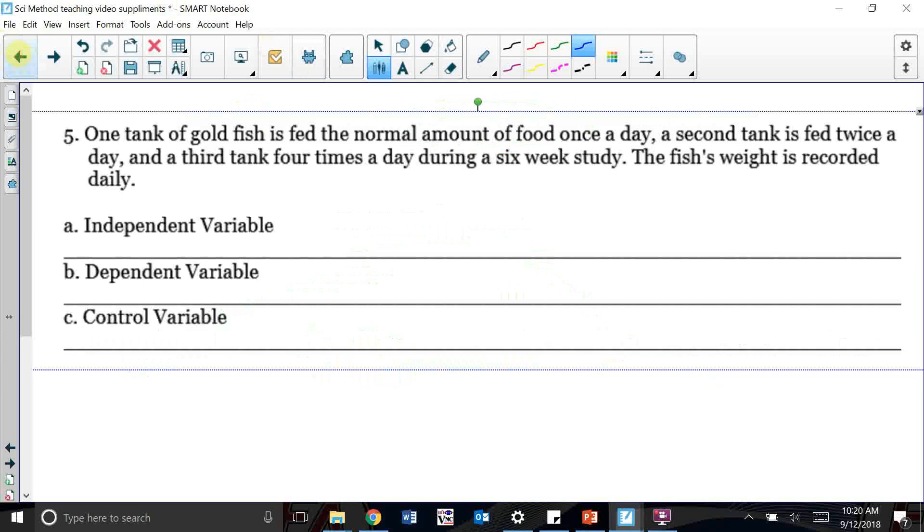Let's go ahead and take a look at an example here. This is one of the examples we have in our note packet. One tank of goldfish is fed the normal amount of food once per day, a second tank is fed twice a day, and a third tank four times a day during a six-week study. The fish's weight is recorded daily.